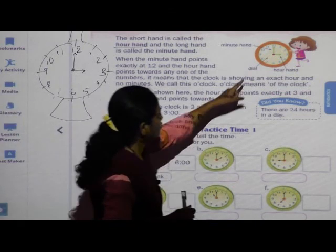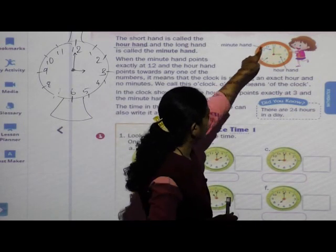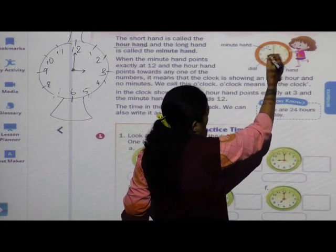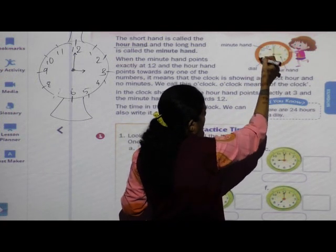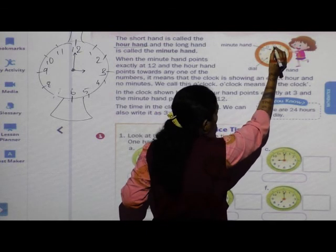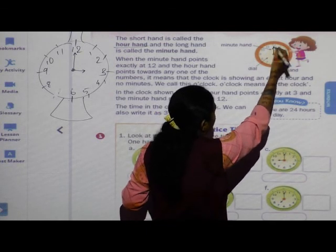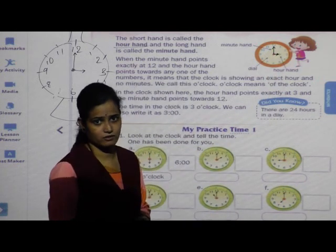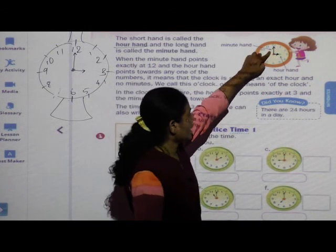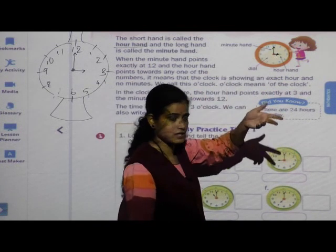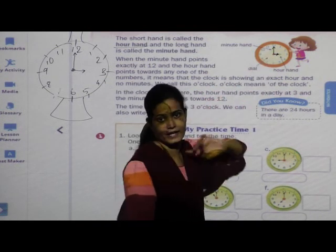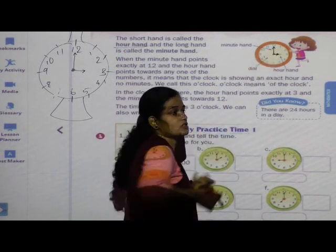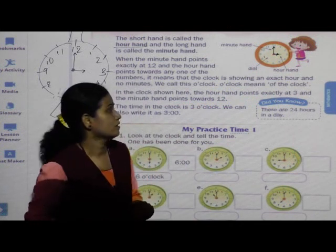On the clock you can see: this is the face, these are the numbers, this is the minute hand (long hand), and this is the hour hand (short hand). The face of the clock is also called the dial.